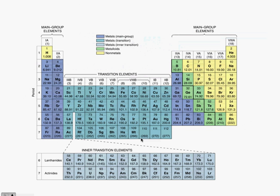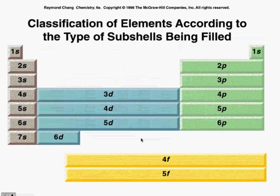Here we have a picture of the periodic table. What's important to understand is that the periodic table is organized according to its subshells. In groups 1 and 2, we have our S orbitals. In groups 3 to 8, we have P orbitals. In our transition metals, we find our D orbitals. In our inner transition metals, we find our F orbitals.